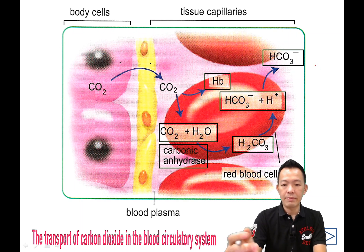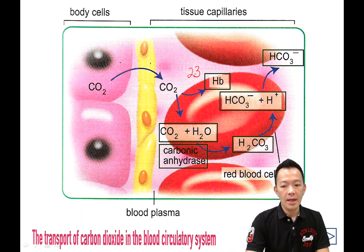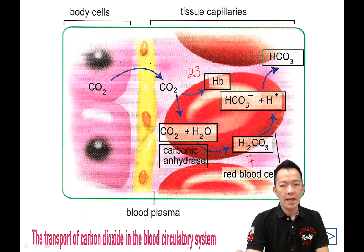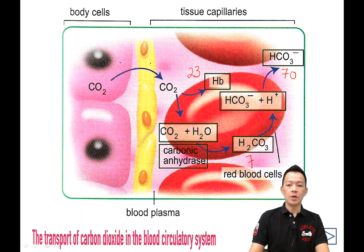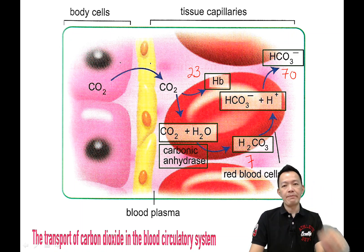So bicarbonate ions will flow inside the blood plasma. In summary: carbaminohemoglobin is 23%, carbonic acid is about 7%, and bicarbonate ions are about 70% — the highest quantity. The hydrogen ions also flow inside the blood plasma. So three forms of carbon dioxide are present inside our blood capillary.